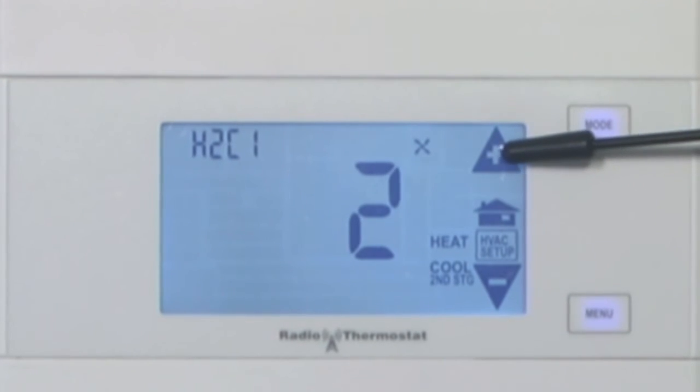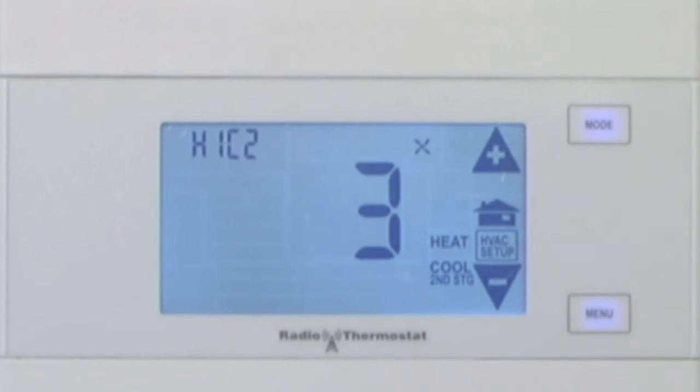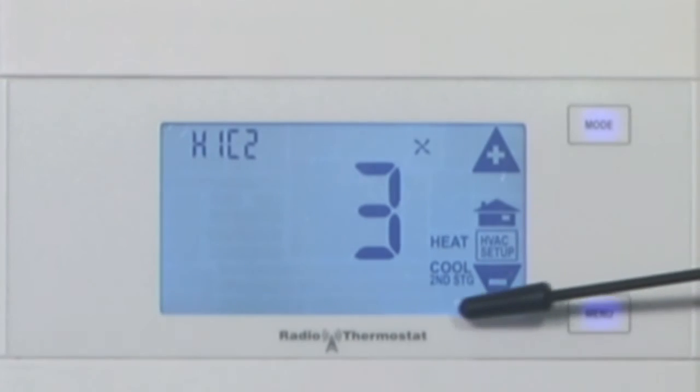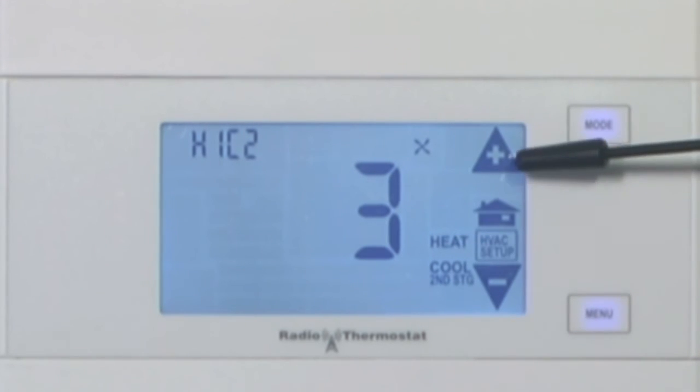Press it again and you go to one stage of heat, two stages of cool. That means your air conditioner has two stages, your heat has one. You can also look down at the bottom here, it says cool, second stage, heat, one stage.